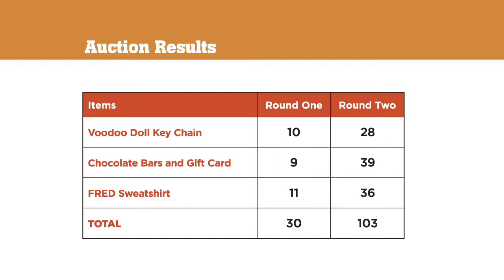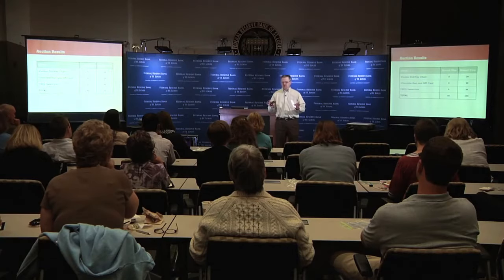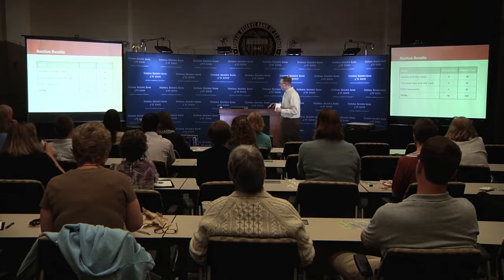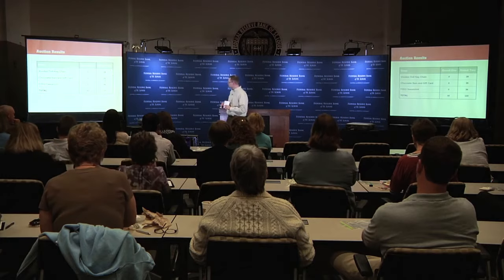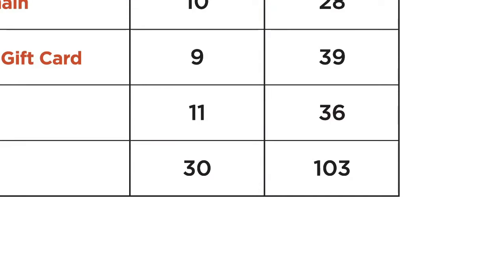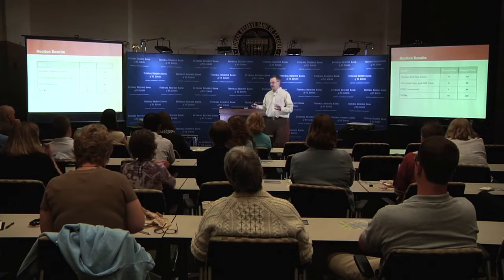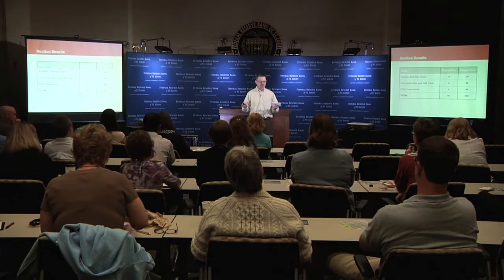In our first round, the total price paid for all three goods was $30. Round two was $103. Were there any differences in the goods sold in the two rounds? No — they were identical. So how would you explain the difference in the price? In round two, more than three times the total price was paid. It was the quantity of chips — and the chips in this auction represented money. So would it be safe to conclude that the amount of money has something to do with the price of the goods in the two markets?